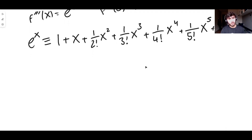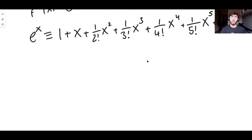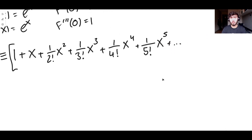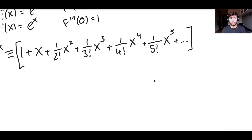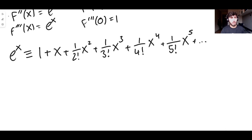Something very nice about this formula is that we know the derivative of e to the x is itself. So if we differentiate this expression for e to the x, it should also equal itself, because this expression on the right-hand side is e to the x — they're the same thing, as long as it goes on forever, which it does. So when we differentiate it, it should equal itself.